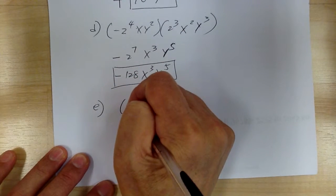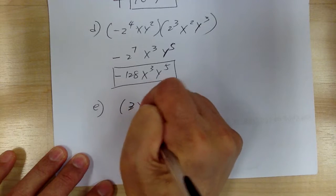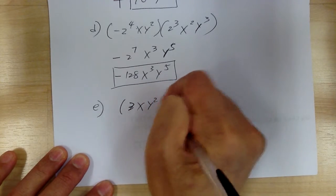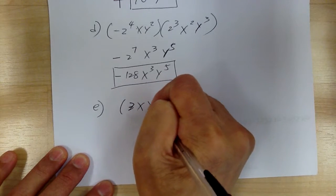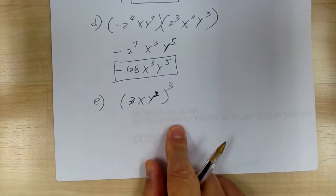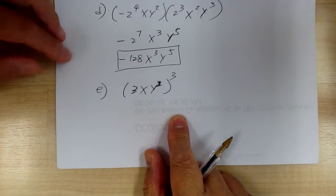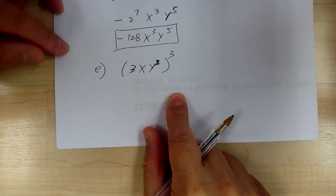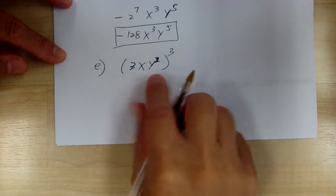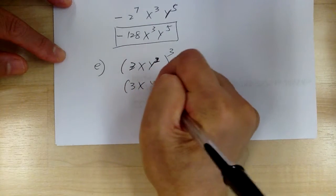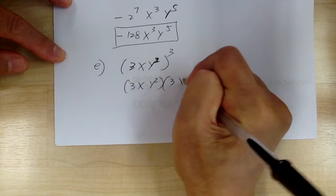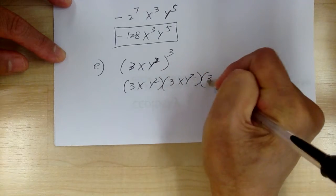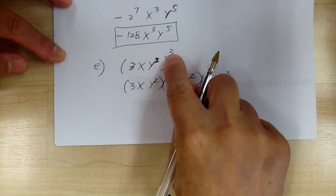So next let's go to 3 xy squared to the 3. So some of you probably don't remember the power rule yet. So if you don't remember the power rule, what you need to do is write it out 3 times. That's what a cube means, right?